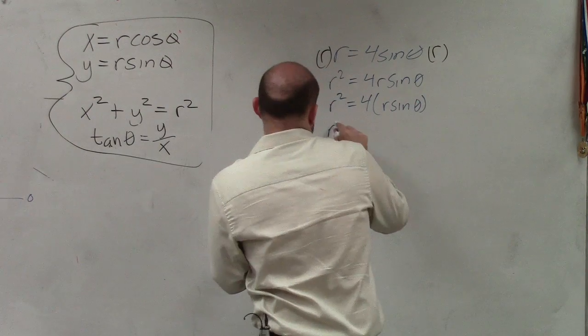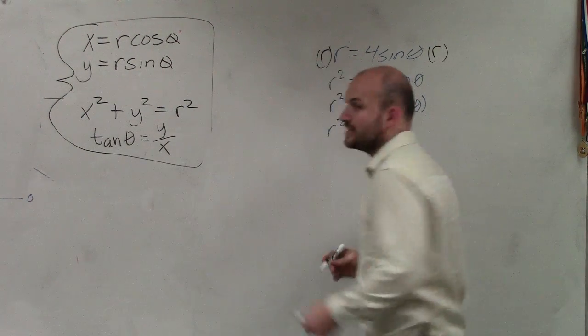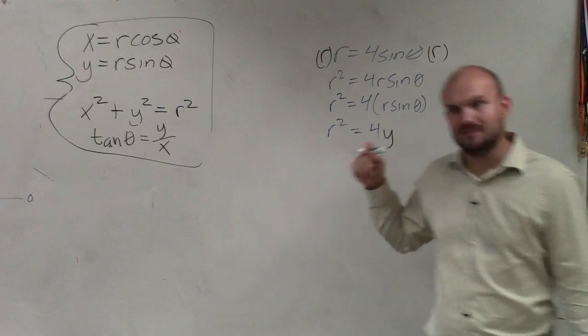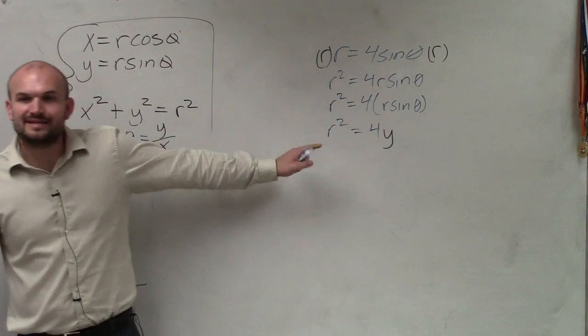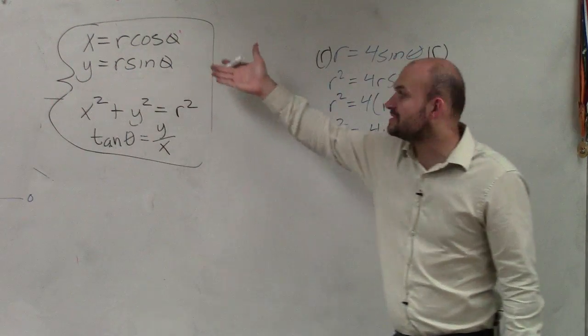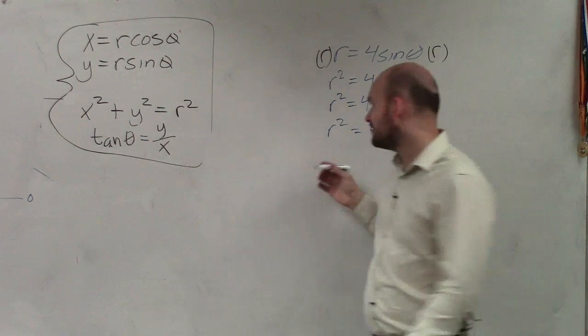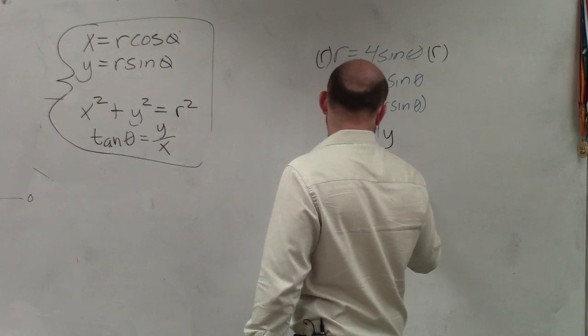So now I can say r squared equals 4 times y. So I got rid of the sines. But now I need to get rid of this r squared. So then I go back. And what can I represent r squared for? Very good. x squared plus y squared equals r squared.